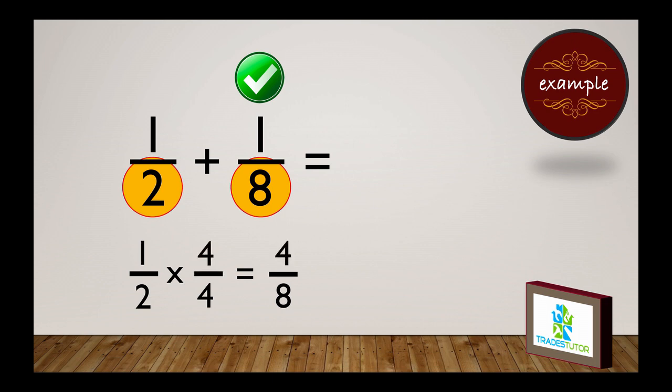Easy enough, you can see 4 eighths is basically 1 half. So, the formula then becomes 4 over 8 plus 1 over 8 is, another check mark, 5 over 8. There you go. So, that's adding fractions. Thanks for watchin'.